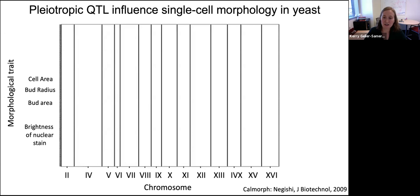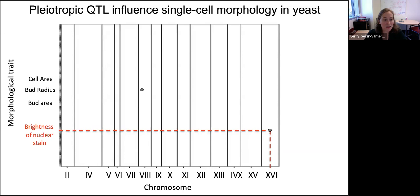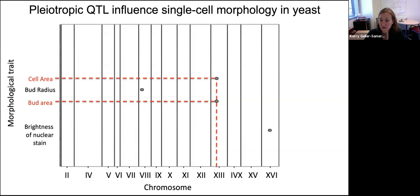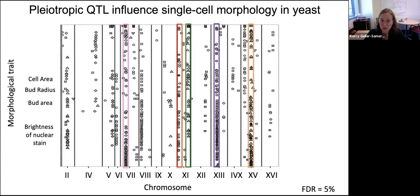Here are the results from our QTL screen. The vertical axis shows every one of the morphological phenotypes that the software measures — about 150 phenotypes. The horizontal axis is the yeast genome organized by chromosome. A point on this plot means there's a region of the genome that contributes to a difference in a trait between the vine and oak strains. Here's a pleiotropic region on chromosome 13 that affects two traits. And here's a QTL contributing to variation in 73 morphological traits.